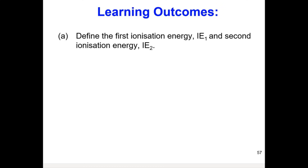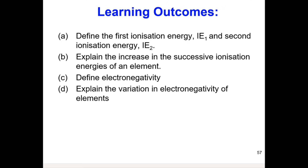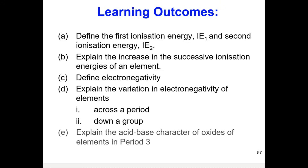At the end of this lecture, you should be able to define the first ionization energy and second ionization energy, explain the increase in the successive ionization energies of an element, define electronegativity, explain the variation in electronegativity of elements across a period and down the group, and explain the acid-base character of oxides of elements in period 3.